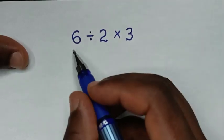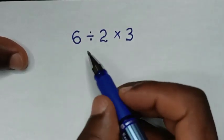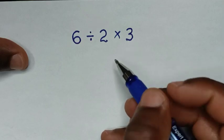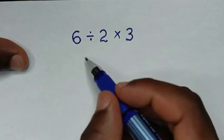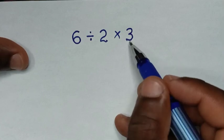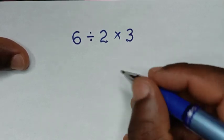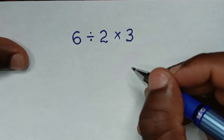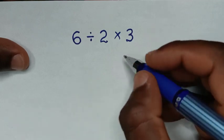Hello, you're welcome. Let's solve this math problem involving order of operations. The problem is 6 divided by 2 times 3. We'll solve this using the BODMAS rule, so let's write the rule.